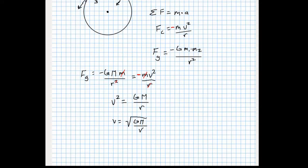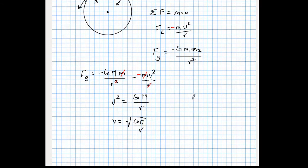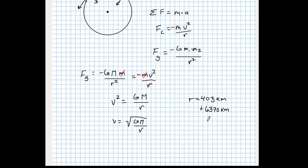The radius here isn't just the altitude above Earth's surface — it's the distance between the centers of the two objects. So I need to add the radius of the Earth, which is 6,370 kilometers. That gives a total orbital radius of 403 + 6,370 = 6,773 kilometers.